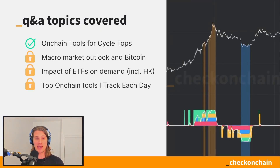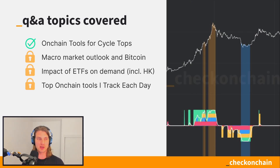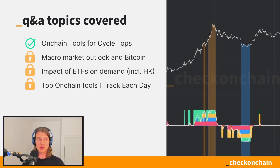This is the first of four questions we covered in our Substack Q&A, which we do once a month to get a feel for what subscribers want to understand. There were questions about different metrics, and we've just launched our masterclass series with the first topic on the realized cap and MVRV from first principles. There were also questions about how Bitcoin fits into the macro economy.